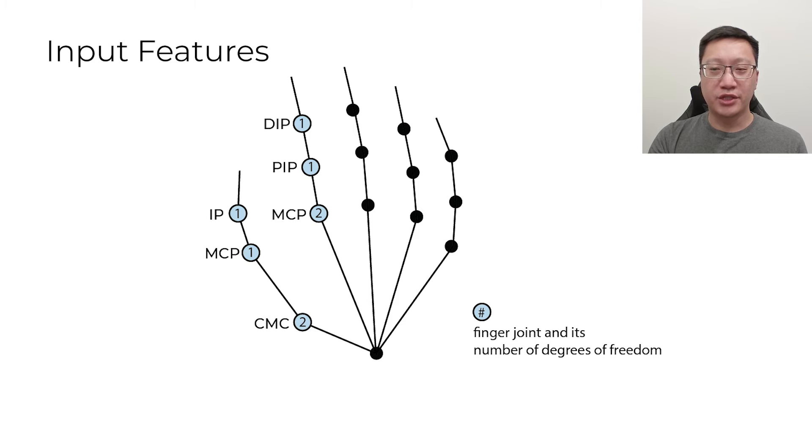With our collected data, we can begin training. As our gestures only rely on the coordination of the thumb and index fingers, our input features are eight joint angles, four from each finger.